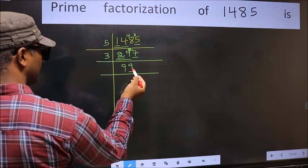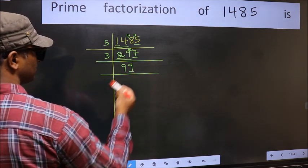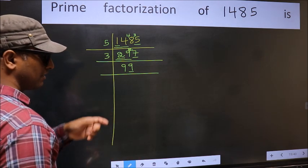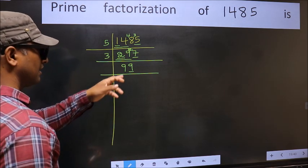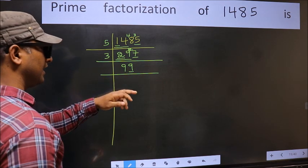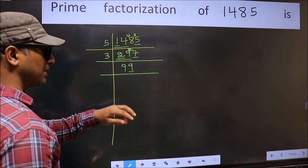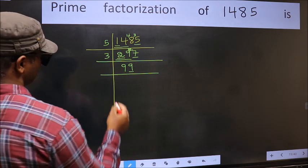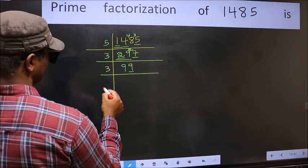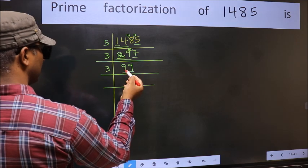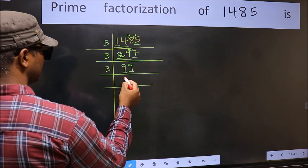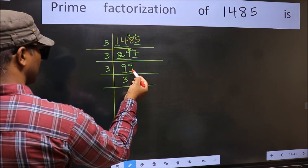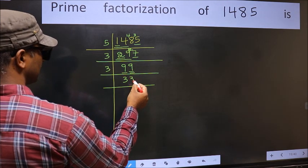Now last digit 9 is not even, so not divisible by 2. To check divisibility by 3, we add the digits. 9 plus 9 is 18, and 18 is divisible by 3. So this number is also divisible by 3. So take 3 here. First number 9. When do we get 9 in the 3 table? 3 threes is 9. The other number 9 — when do we get 9 in the 3 table? 3 threes is 9.